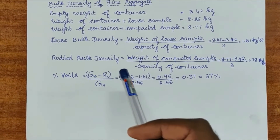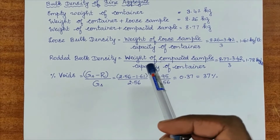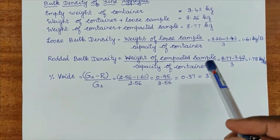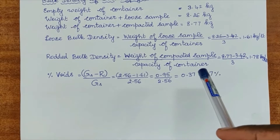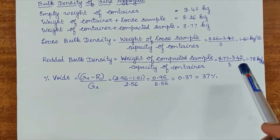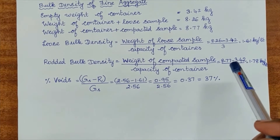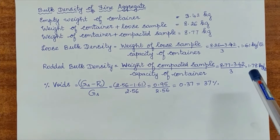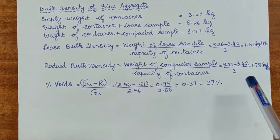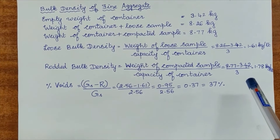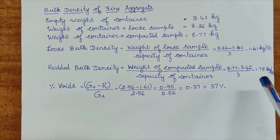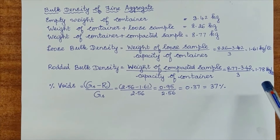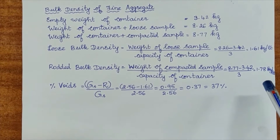For the rodded bulk density, the formula is weight of compacted sample divided by capacity of the container. Substituting the values of 8.77 minus 3.42, divided by the capacity of container which is 3, we get the rodded bulk density of 1.78 kilograms per liter.